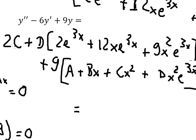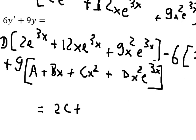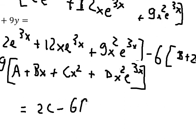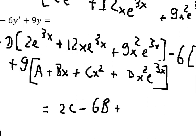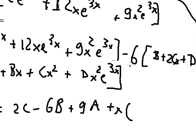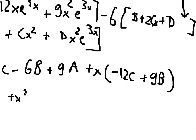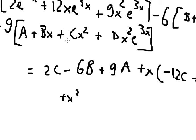After simplifying, we group by type. The constant terms give: 2C − 6B + 9A. The x terms give: −12C + 9B. The x² terms give: 9C. For the e^(3x) term, simplifying the D contribution gives 2D·e^(3x).